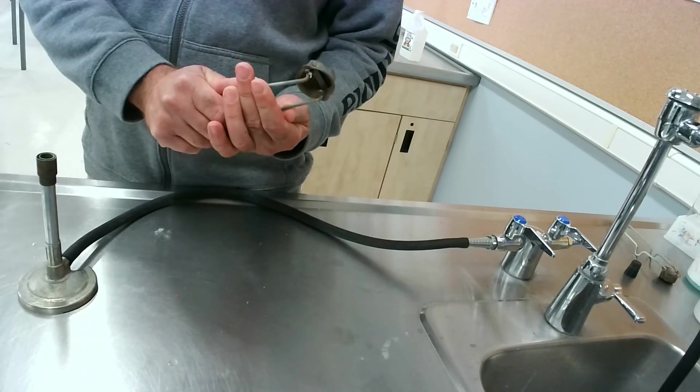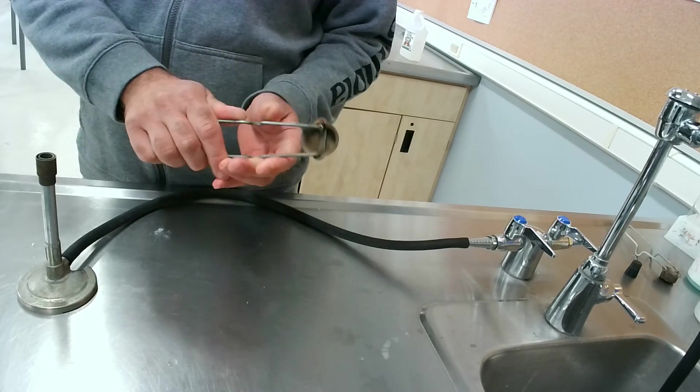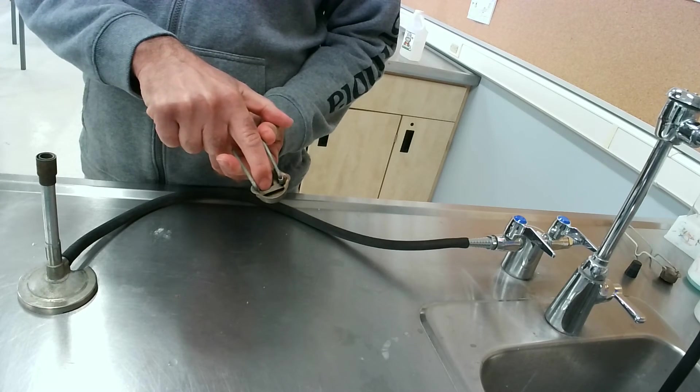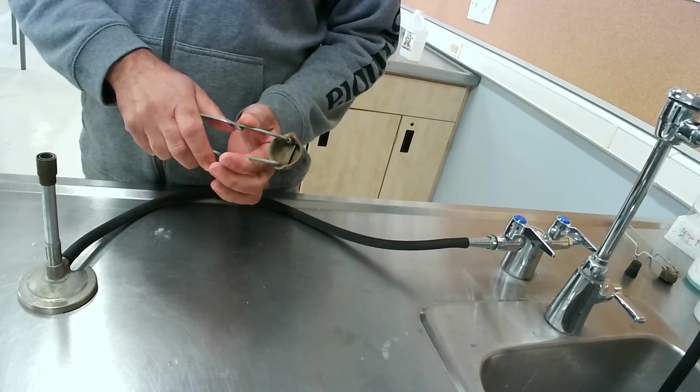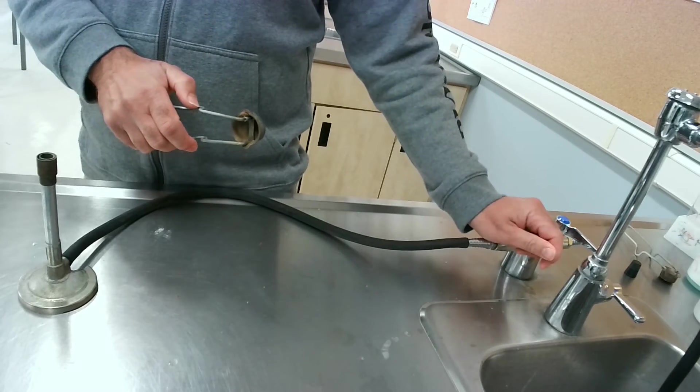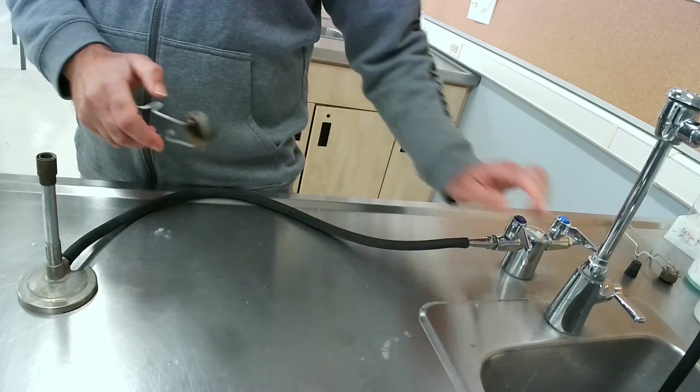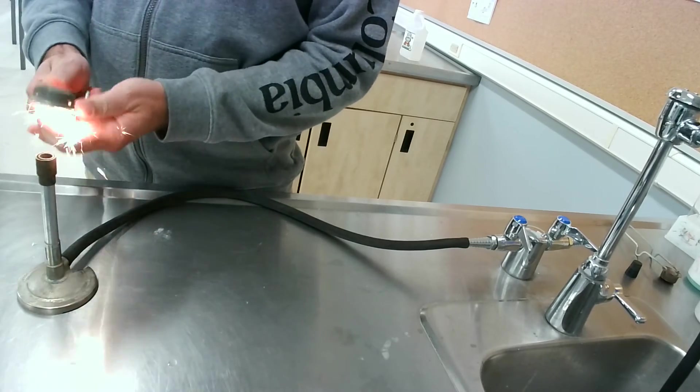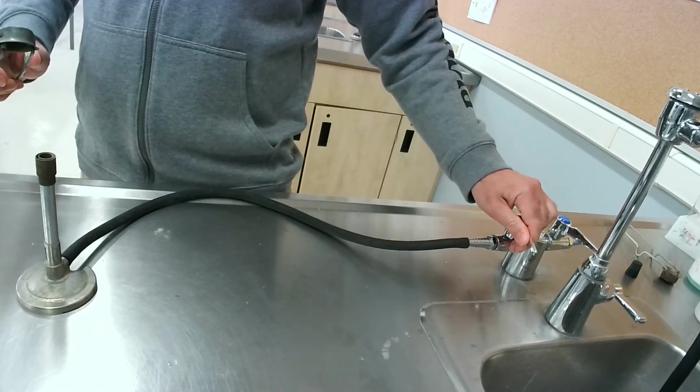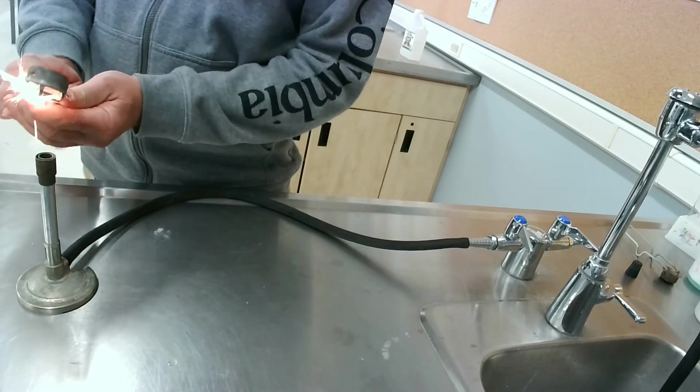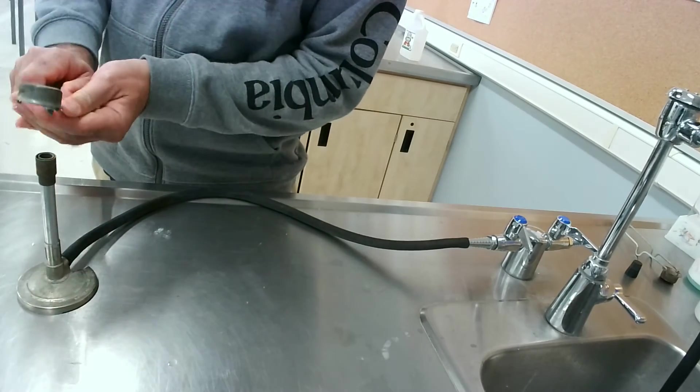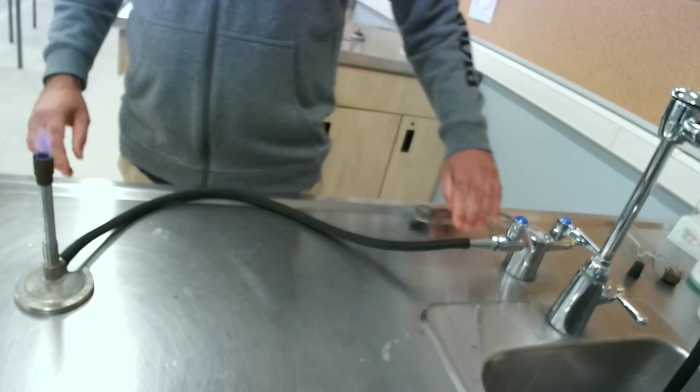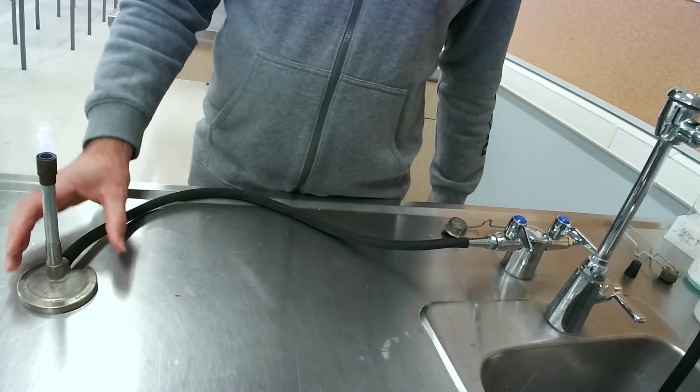You can see the spark that's created. There's a little flint inside that rubs on the file to create the spark. So here we go. There we go. That one took a little more work than normal.